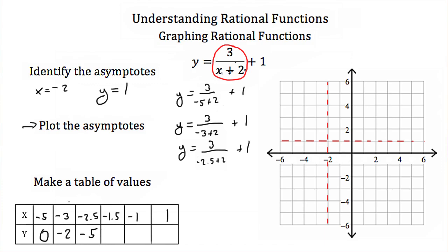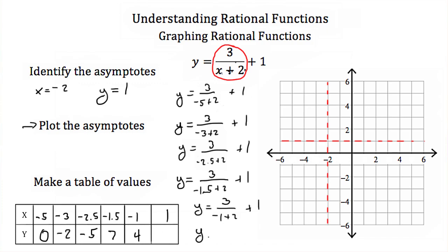If I plug in negative 1.5, y is equal to 3 over negative 1.5 plus 2, plus 1. Negative 1.5 plus 2 is positive one-half, and 3 divided by positive one-half is 6, plus 1 gives positive 7. If I plug in negative 1, I'll have 3 over negative 1 plus 2, plus 1. Negative 1 plus 2 is positive 1, and 3 divided by positive 1 is 3, plus 1 gives 4. And then plug in 1 for x — we'll have 3 over 1 plus 2, plus 1. 1 plus 2 is 3, and 3 divided by 3 is 1, plus 1 gives 2.